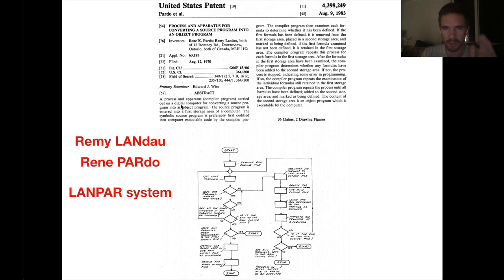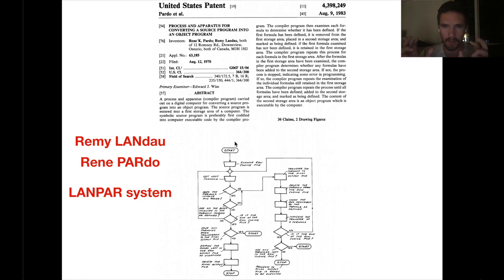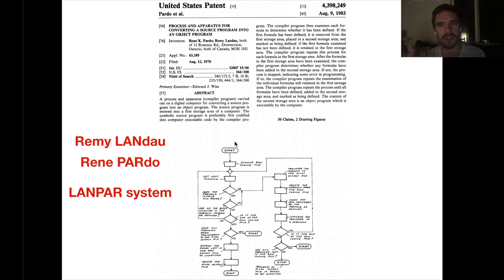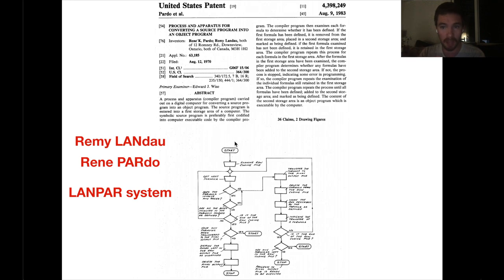Reading from the patent: it's a process and apparatus — a compiler program carried out in a digital computer — for converting a source program into an object program. The source program is entered into the first storage area. The compiler then examines each formula to determine whether it has been defined. If defined, it's moved to the second storage area and marked as defined. If not defined, it's retained in the first storage area. The compiler repeats this process for each formula. This is a pretty significant change.